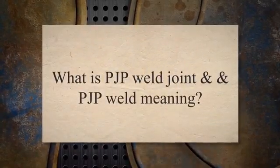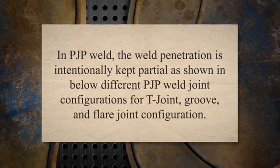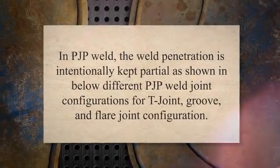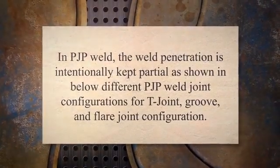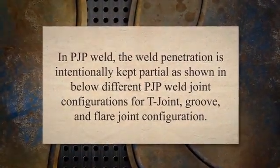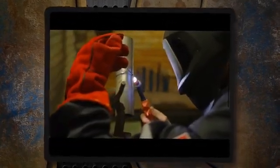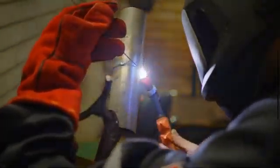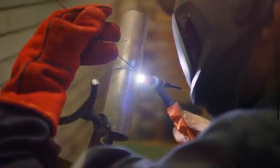PJP means partial joint penetration. Due to welding being done from one side, partial penetration groove welds are most often used in certain circumstances. In a PJP weld, the penetration is intentionally kept partial. For T-joint, groove, and flare joint configurations, the weld penetration does not reach the weld root, and the weld throat size S is always less than the base metal thickness.